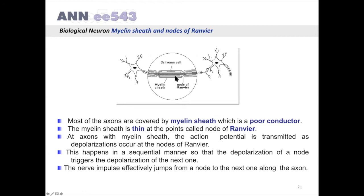At axons with myelin sheath, the action potential is transmitted as depolarization occurs at the nodes of Ranvier. This happens in a sequential manner so that the depolarization of a node triggers the depolarization of the next node. The nerve impulse effectively jumps from one node to the next along the axon.